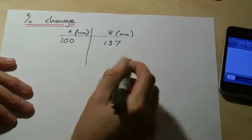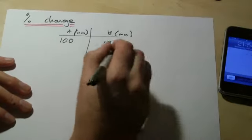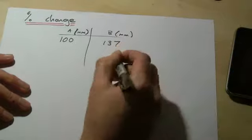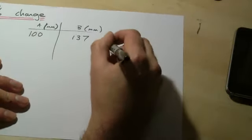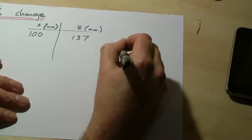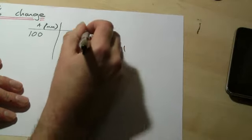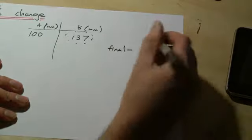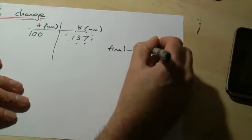Now a couple of ways you can think of this. The more complex way perhaps, depends how confident you are in the maths, is to say the newest or the final measurement, what it's ended up as, minus the original measurement.